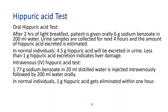Before the test, the patient has to void his urine and empty his bladder. Then after that, 6 grams of sodium benzoate should be given to him to drink orally. For the next 4 hours, urine should be collected and the amount of hippuric acid excreted during this 4 hours should be estimated.